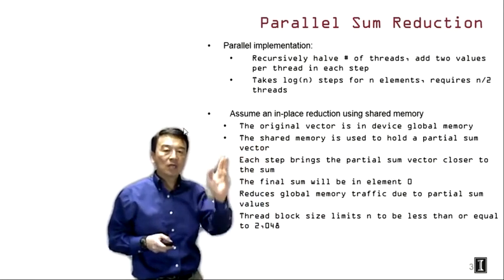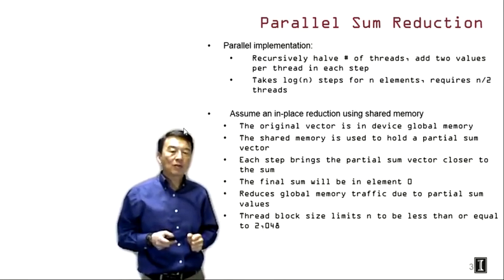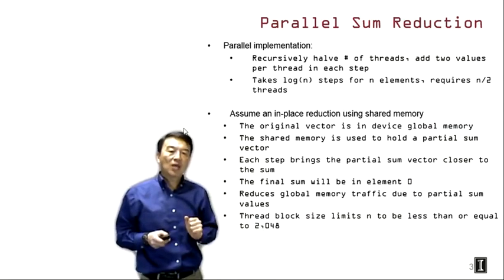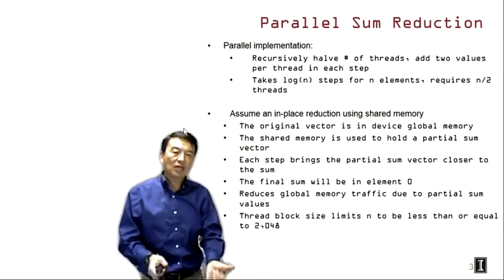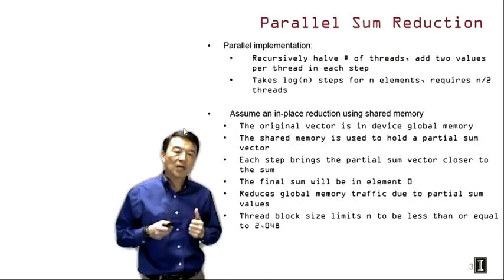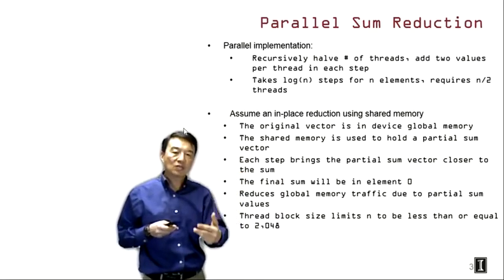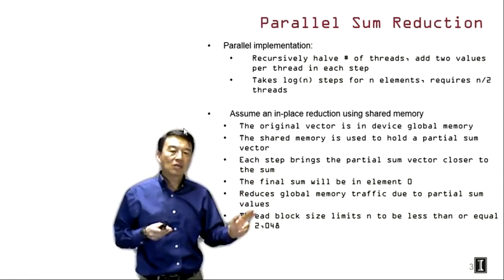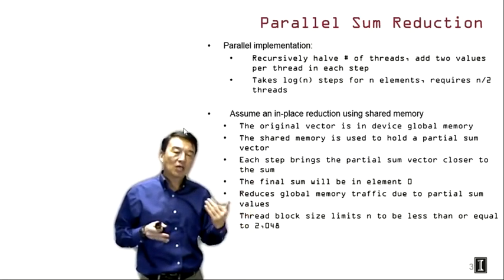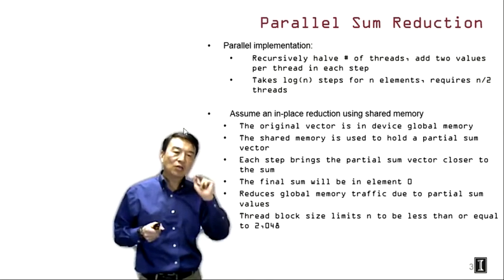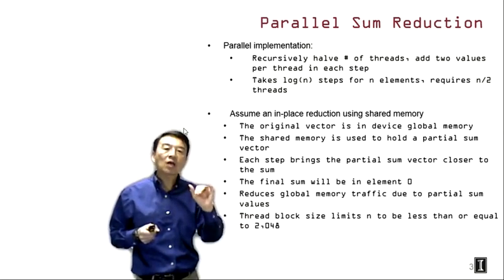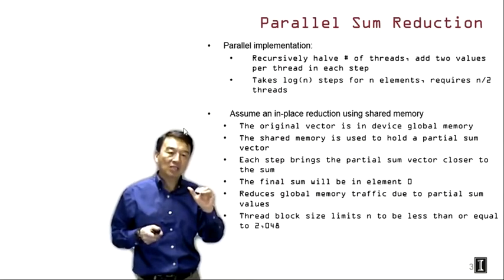We will assume an in-place reduction using shared memory. The original vector is in device global memory, and all the threads will collaborate to load a section of these elements into the shared memory. We will use shared memory as a partial sum vector, and every step we will bring the partial sum vector closer to the final sum. The final sum will be in element zero of the shared memory array. This reduces global memory traffic because once we load the elements into shared memory, all reads and writes of the partial sums in the reduction tree will be done in shared memory.